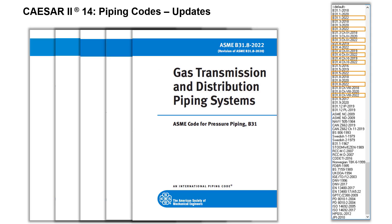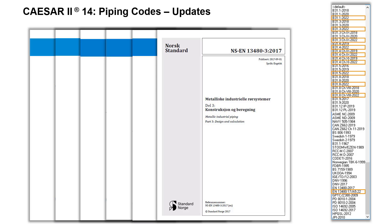Also updated are ASME B31.8 2022 Edition Gas Transmission and Distribution Piping Systems, and EN 13480-3 2017/A5 2022 Metallic Industrial Piping Part 3 Design and Calculation.